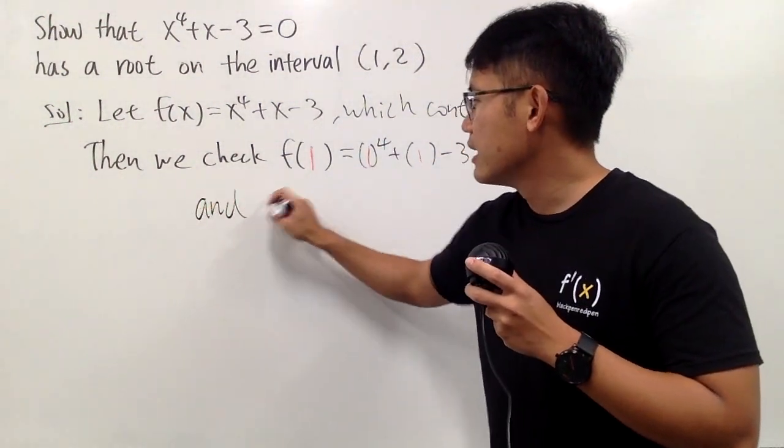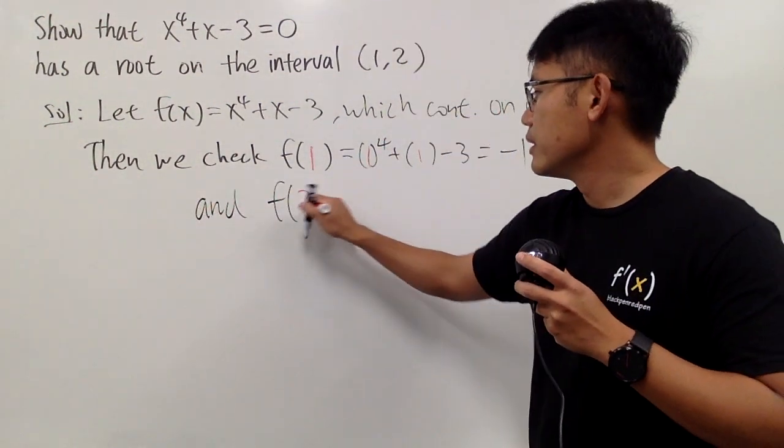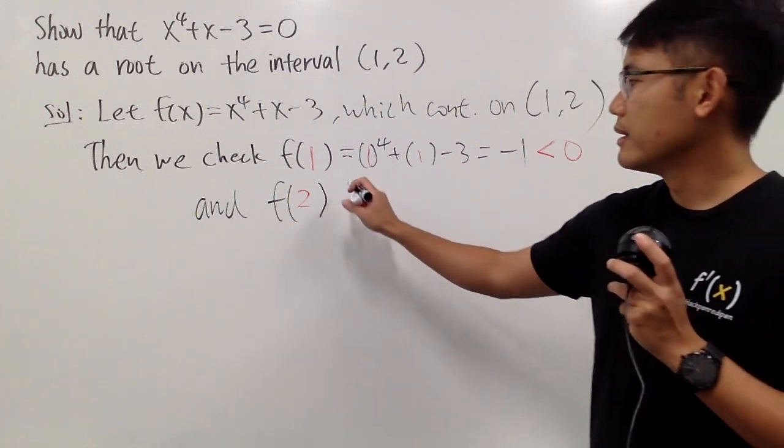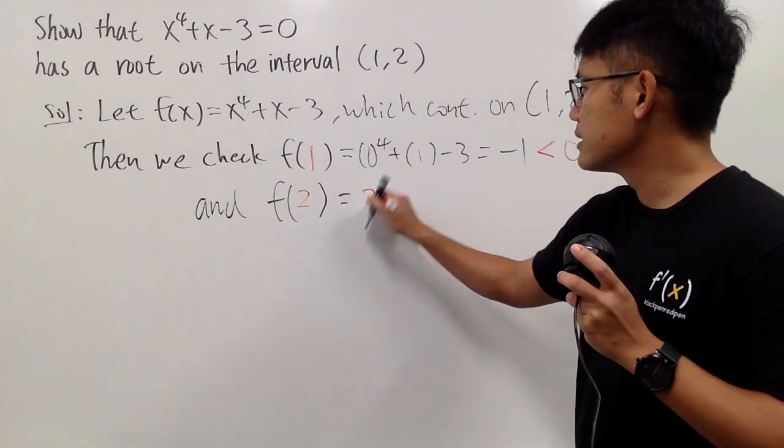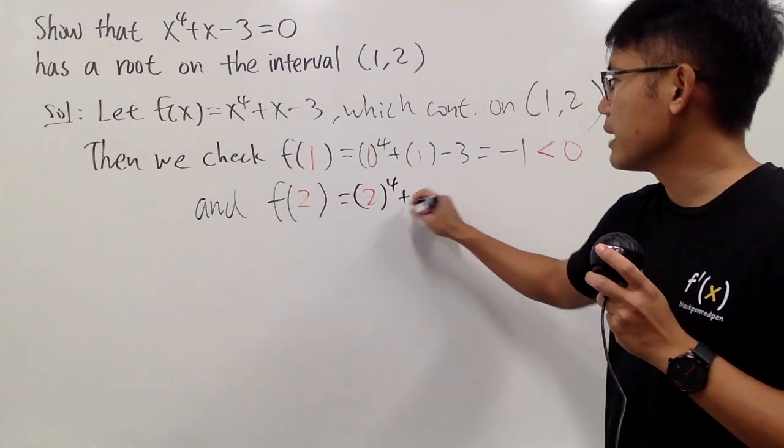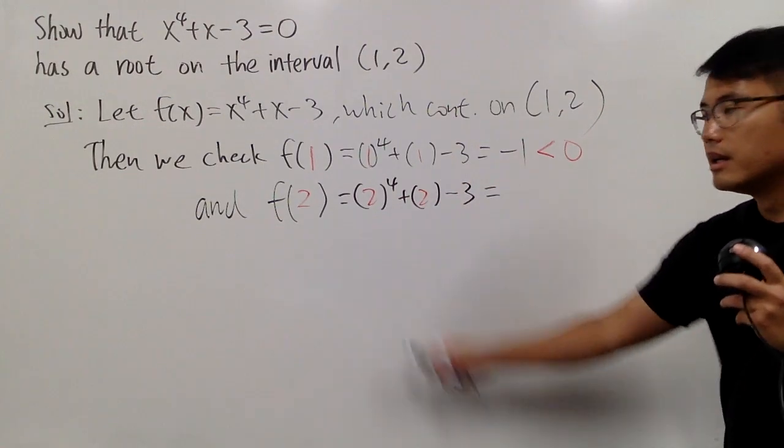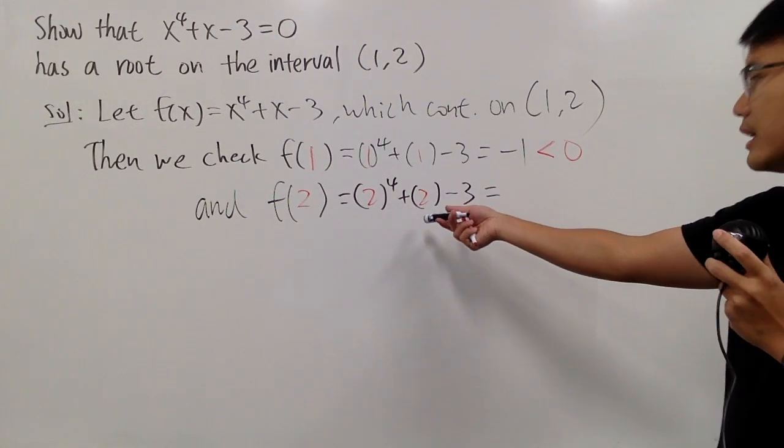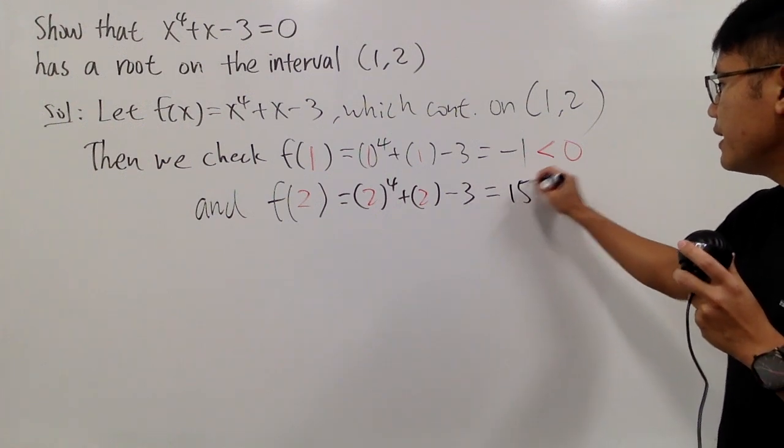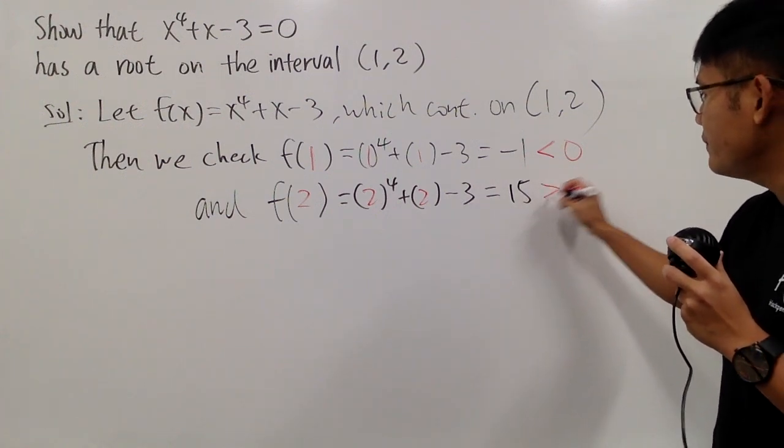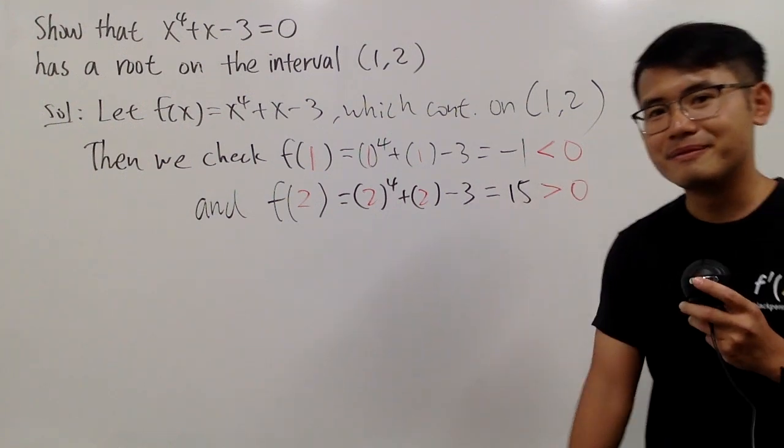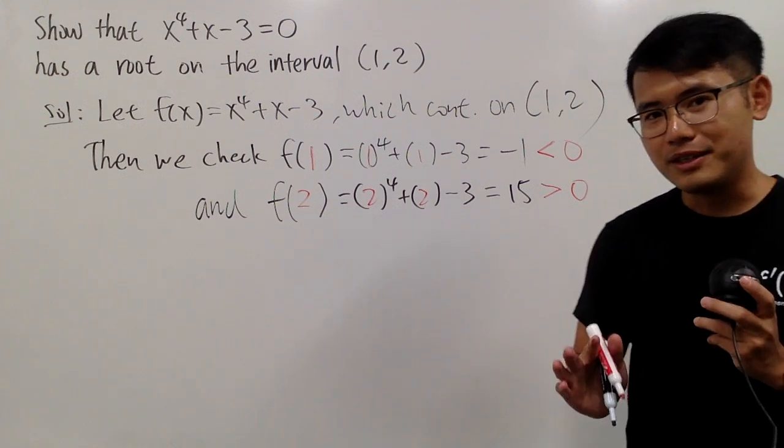And we also check f of 2, and we do the same thing. You plug in 2 into x, so you have 2 to the fourth power and then plus 2, and then minus 3. This is 16 plus 2 is 18, and then minus 3 is 15. And most importantly, 15 is positive, right? So here's the deal.